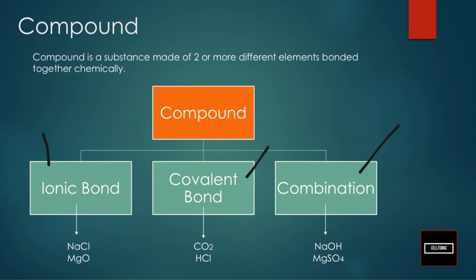So examples of ionic bonding, we have NaCl, sodium chloride, also known as table salt. So the salt that you add to your food is actually sodium chloride. We also have magnesium oxide.